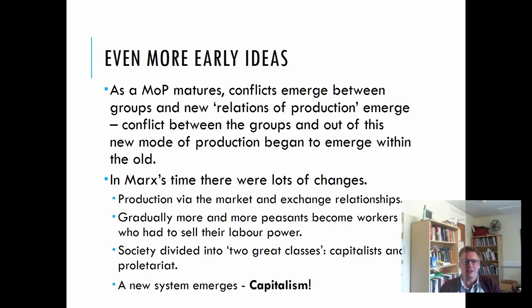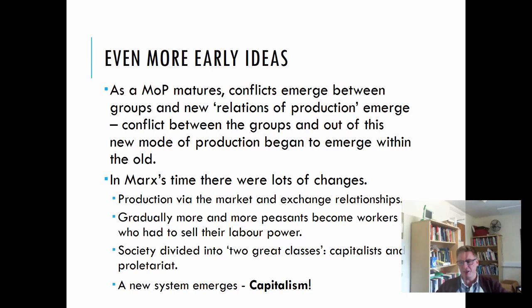People had cash for the first time and were buying things en masse for the first time. Gradually more and more peasants became workers — there was a shift. They had to sell their labor rather than working on a piece of land. Society gradually divided in the mid-19th century, within a Marxist interpretation, into two great groups: capitalists — or what Marx termed the bourgeoisie — and the proletariat. The bourgeoisie owned the systems and benefited from them, while the proletariat worked for them, having only their labor to sell.